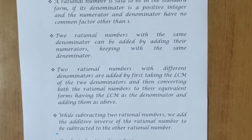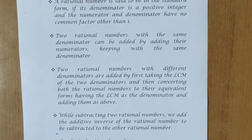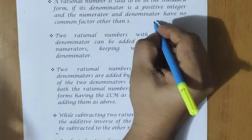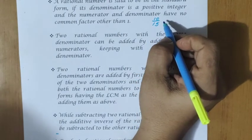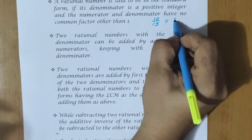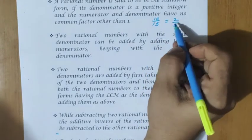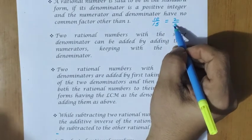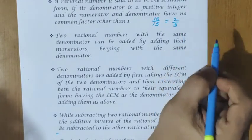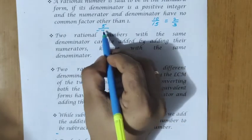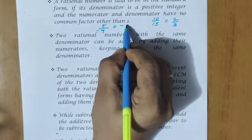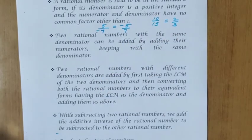A rational number is said to be in standard form if its denominator is a positive integer and the numerator and denominator have no common factor other than 1. For example, 10 by 15 simplified by cancelling common factor 5 gives 2 by 3, which is in standard form. Also, 5 by minus 7 is not in standard form because the denominator is negative; it should be written as minus 5 by 7.